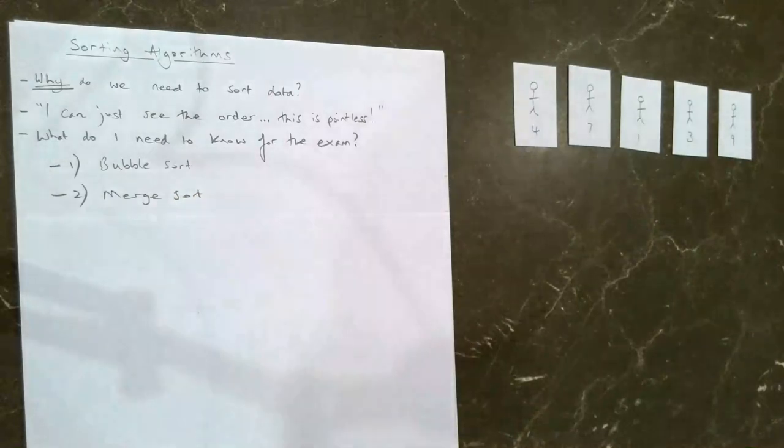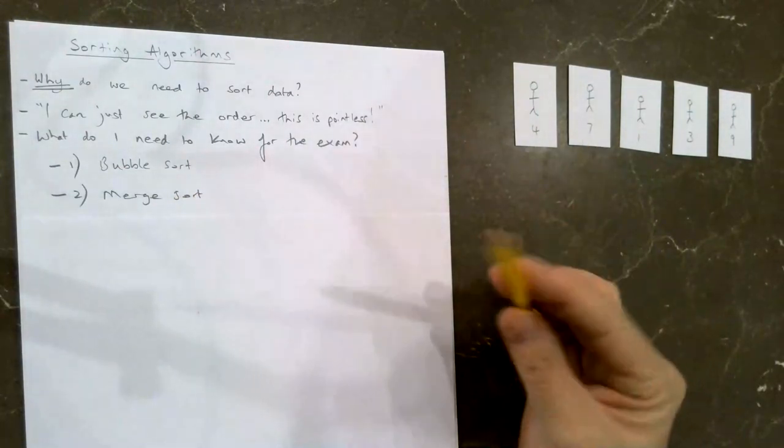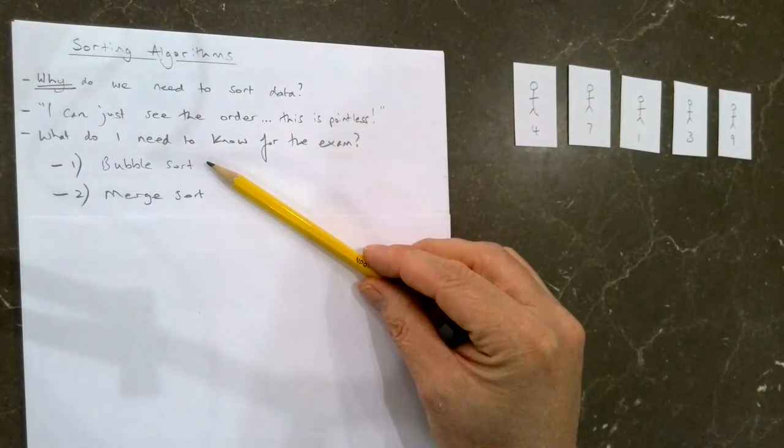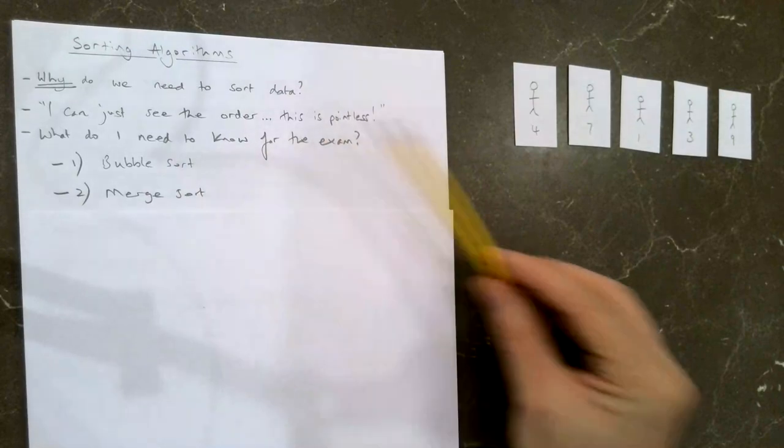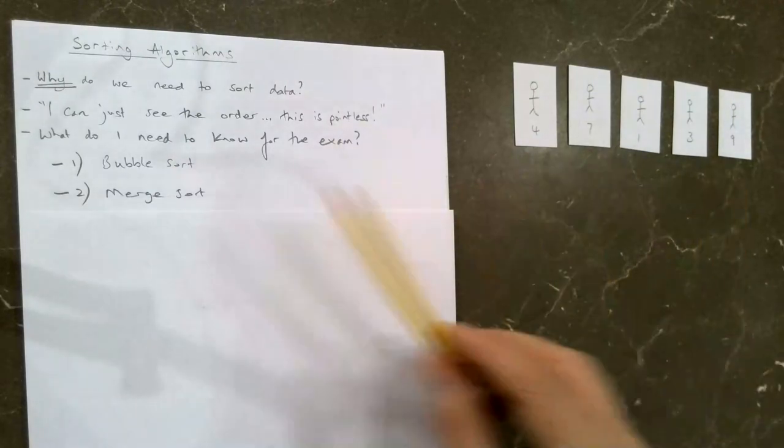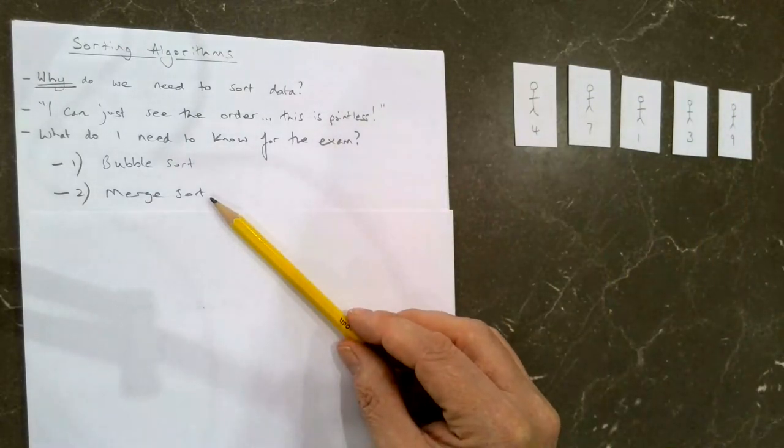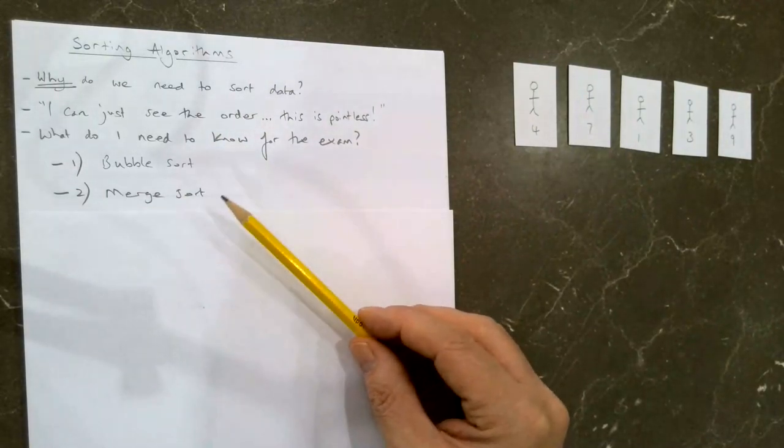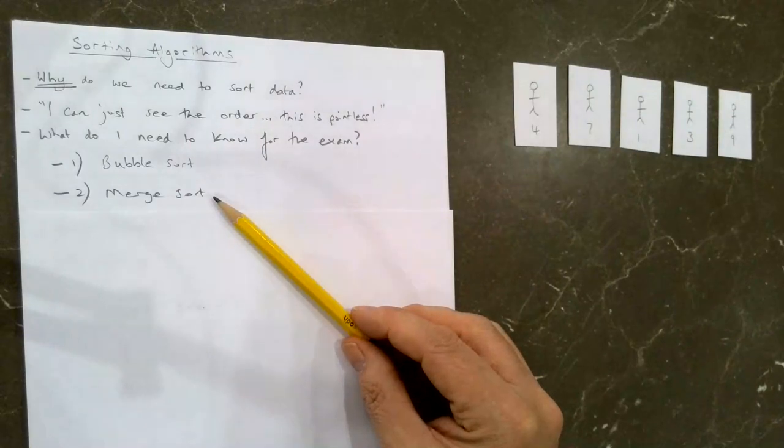And I'll be making separate videos on each of these. The first one is the simpler of the two, the most simple. Works quite nicely for small numbers of data, data items, maybe up to a thousand things. Well, merge sort is more efficient later on when you are sorting more things. And computers sort millions of things very quickly, so merge sort will come in handy there. The difficulty with merge sort is the actual code is more complex.